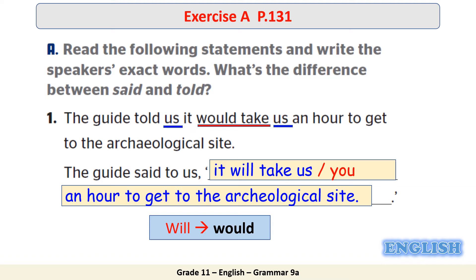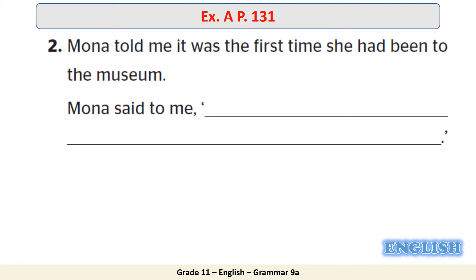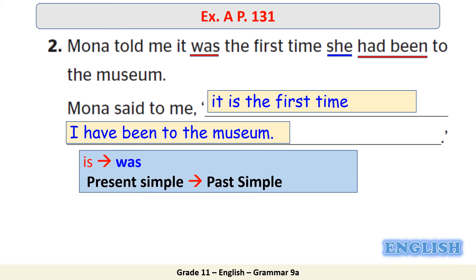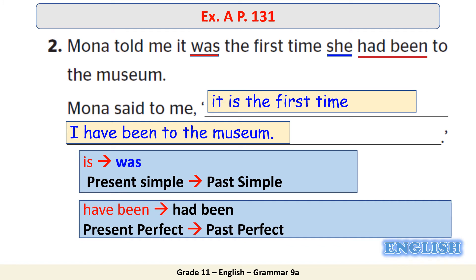Sentence number two: Mona told me it was the first time she had been to the museum. What are the pronouns and verbs that need to be changed? We have 'was,' 'she,' and 'had been.' Mona said to me: 'It is the first time I have been to the museum.' We have 'is' in the direct speech, which becomes 'was' in the reported speech — present simple becomes past simple. And 'have been' becomes 'had been' — present perfect in the direct speech becomes past perfect in the indirect speech.